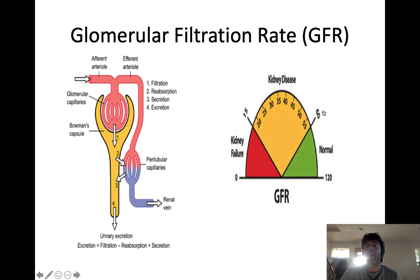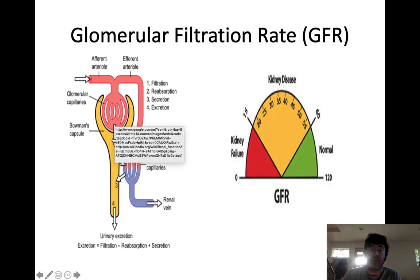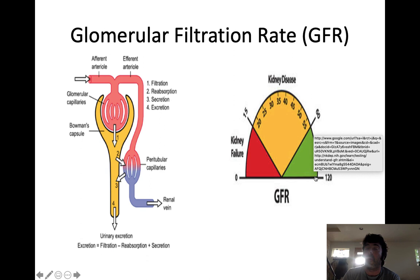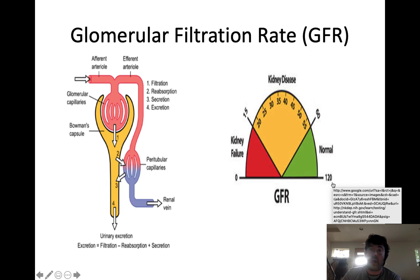If you ever see GFR on a blood test or chem panel, that stands for glomerular filtration rate — just the rate at which the kidneys are creating filtrate per unit time. You can express it as filtrate per day, which is about 180 liters, or in milliliters per minute. A healthy kidney produces around 120 milliliters per minute of filtrate, or about 180 liters over the course of a day. The reason we don't urinate that volume is because we reabsorb most of it.